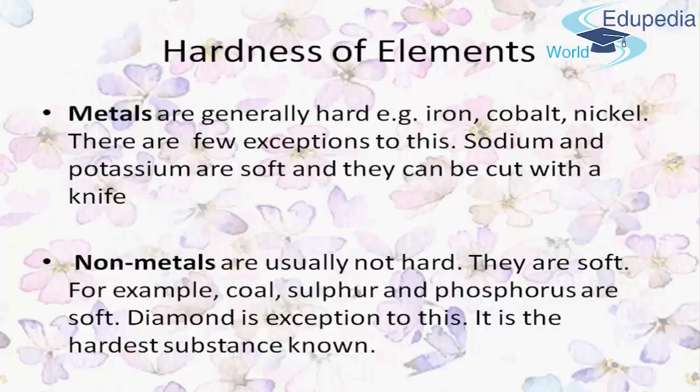When we talk about non-metals, they are usually not hard — the solids are hard and brittle, and some are soft. For example, coal, sulphur, and phosphorus are soft. Diamond is an exception, as it is the hardest substance we know.